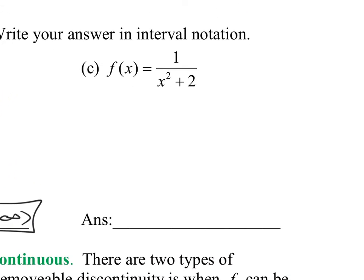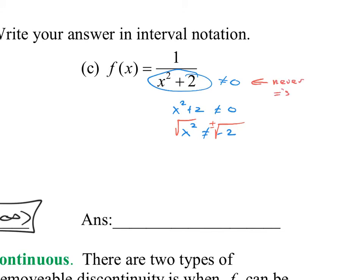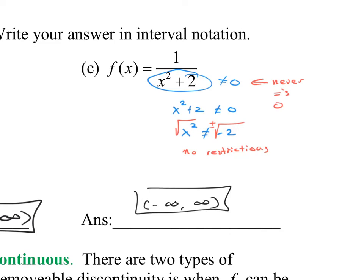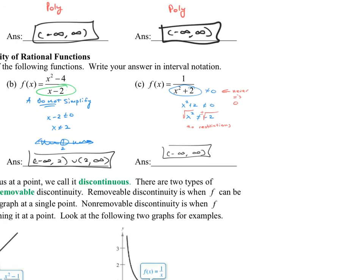How about one over x squared plus two? Set the bottom equal to zero: x squared plus two cannot equal zero. Subtract two: x squared cannot equal negative two. Taking the square root of both sides gives plus or minus the square root of negative two, which does not exist — you can't take the square root of a negative number. This tells me the denominator never equals zero, so there are no restrictions, and the answer is negative infinity to infinity.